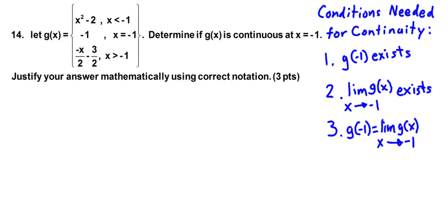Three conditions are needed for continuity. Condition one: that g of negative 1 exists — and it does, g of negative 1 equals negative 1. Second, that the limit as x approaches negative 1 of g of x exists, and we will have to determine that. Third, that g of negative 1 equals the limit as x approaches negative 1 of g of x.